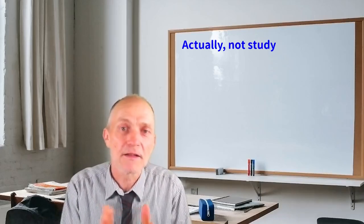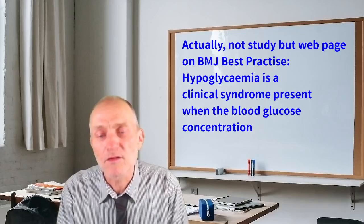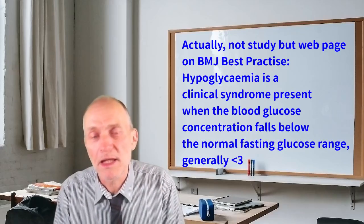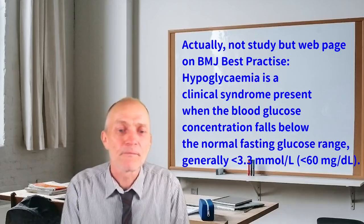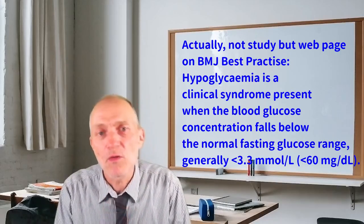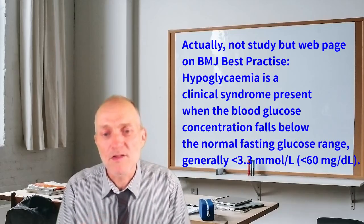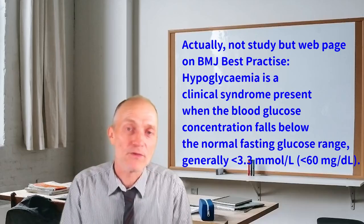There was a recent study in the British Medical Journal stating that the low end of the normal range is 60, or 3.3 millimoles per liter. So such relatively low values between 60 and 70 do actually occur in some people without diabetes.